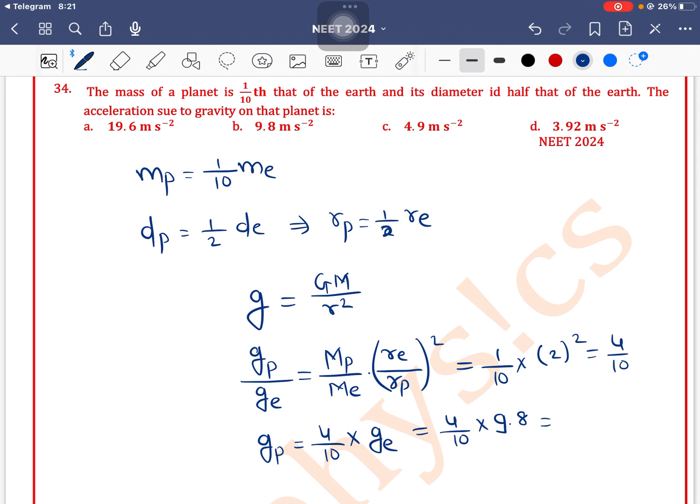So if we solve this, we get 10 cancels out, so it will be 4. The answer is approximately equal to 4. Option d is the correct one.